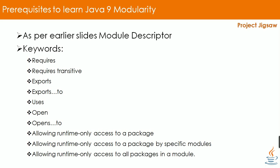Allowing runtime-only access to a package: an opens module directive of the form 'opens package' indicates that a specific package's public types are accessible to code in other modules at runtime only. Also, all the types in the specified package are accessible via reflection.